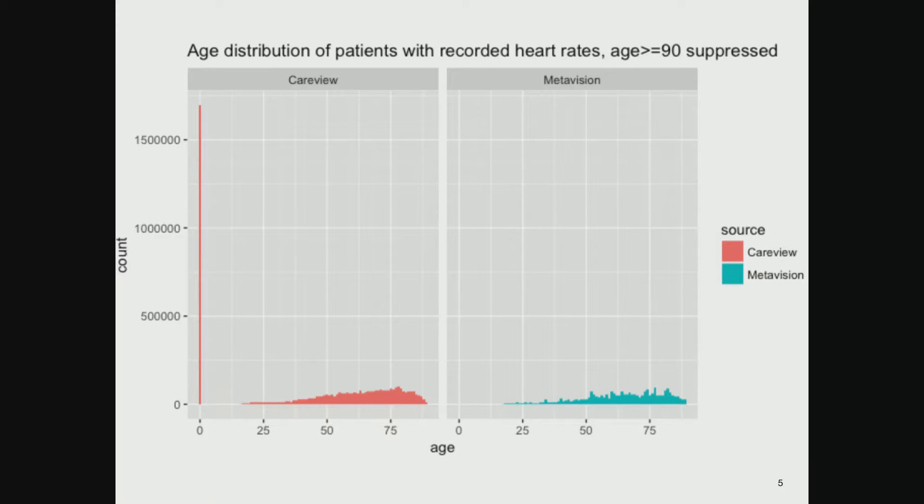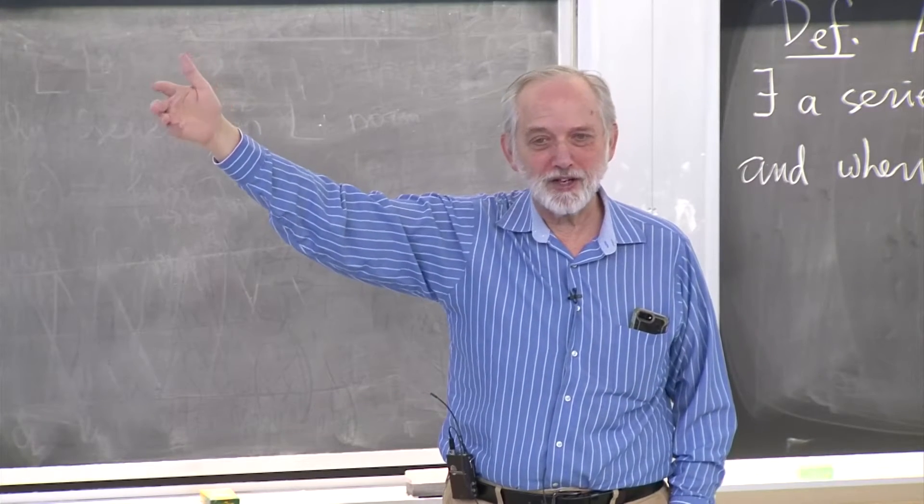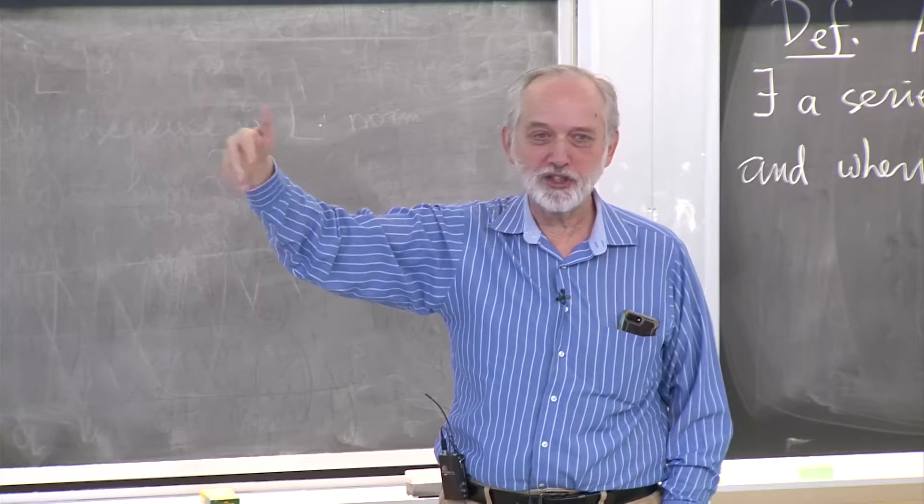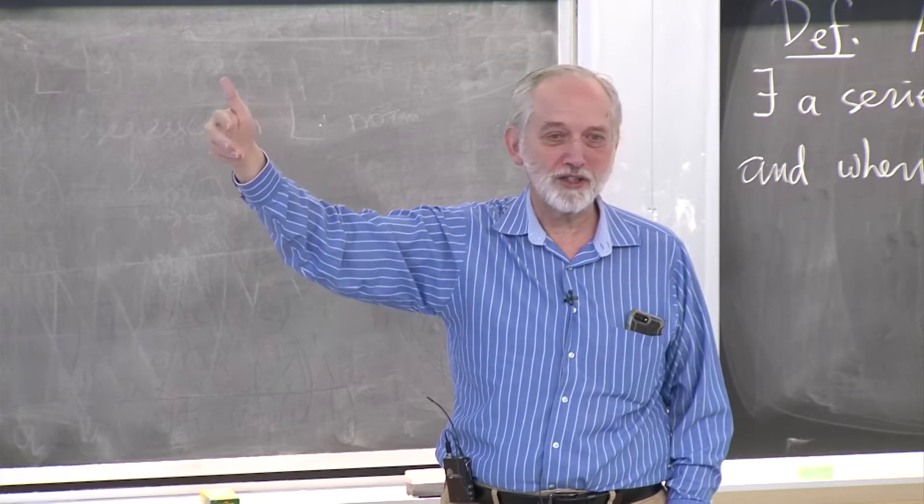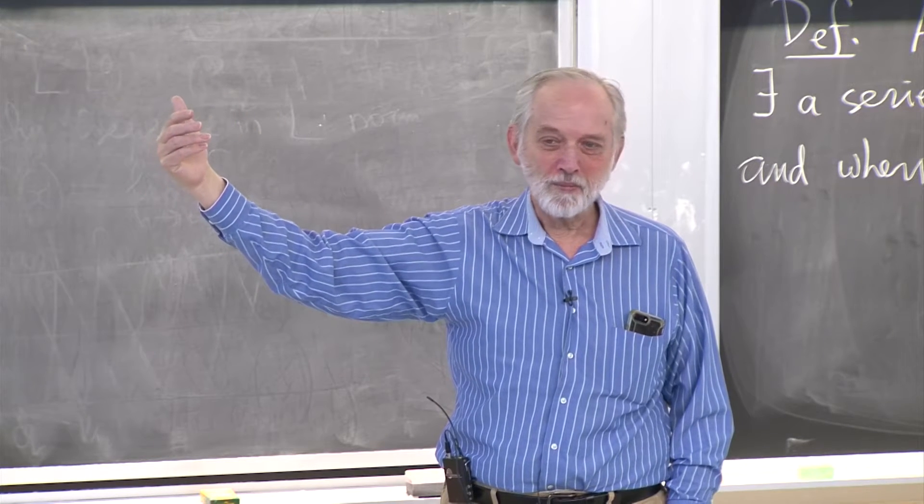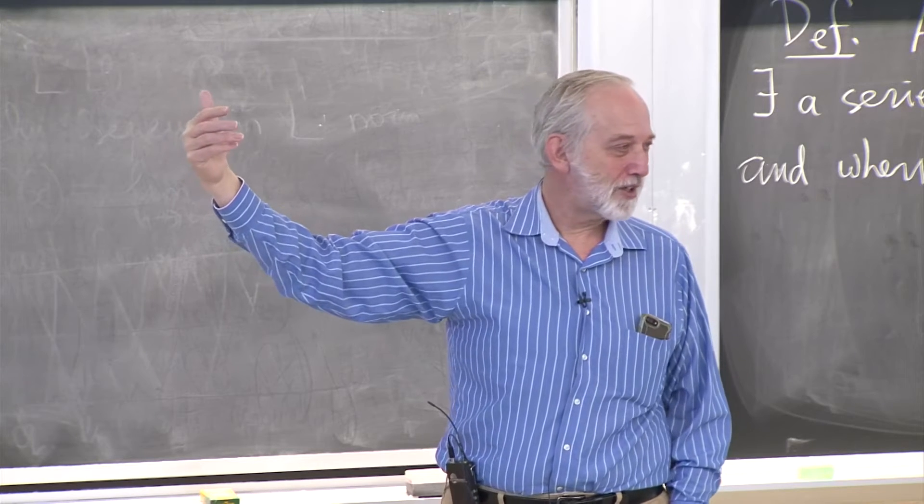But if I don't exclude the very young or very old, I see this funny distribution where there's a giant spike at age 0 in CareView. Under the old system it was used in the NICU. The new system wasn't used in the NICU, so they didn't capture baby data.